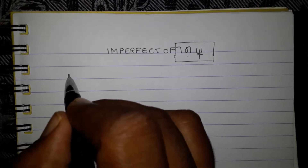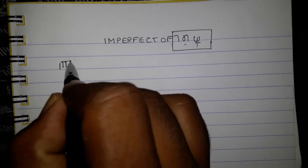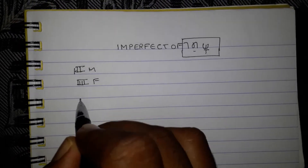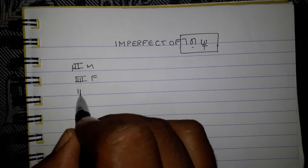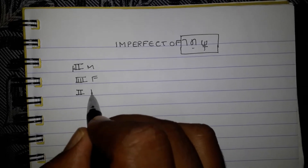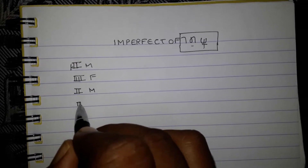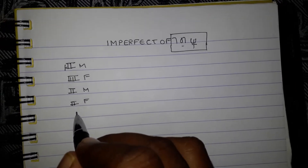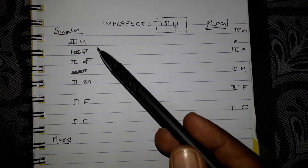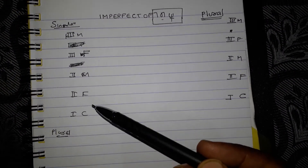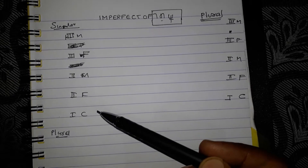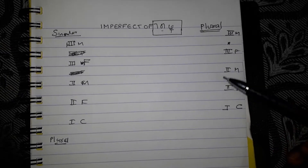So before that you had to write: first, third person masculine; third person feminine; then second person masculine; second person feminine, in this way. And you have written third person masculine, third person feminine, second person masculine, second person feminine, first person. Here it is in the plural.